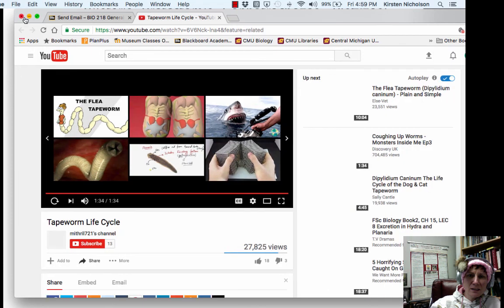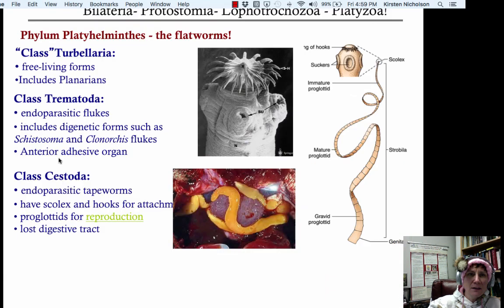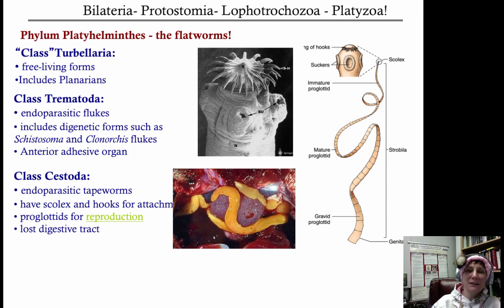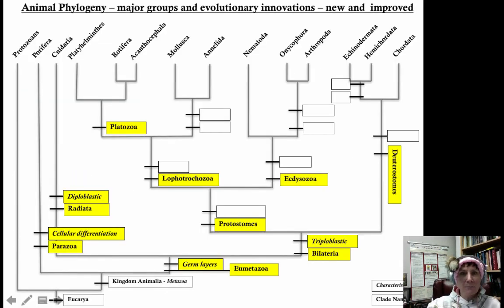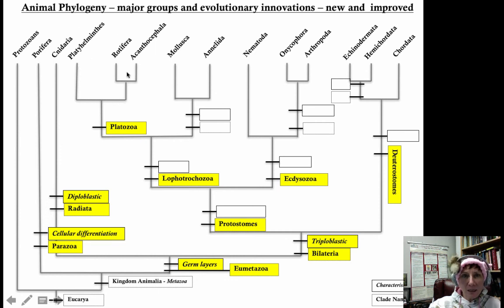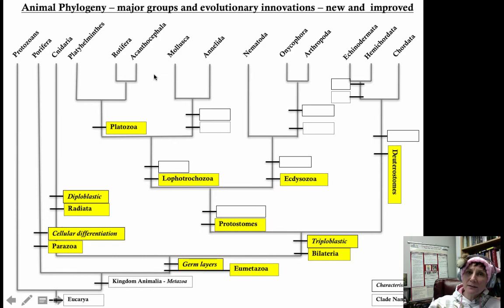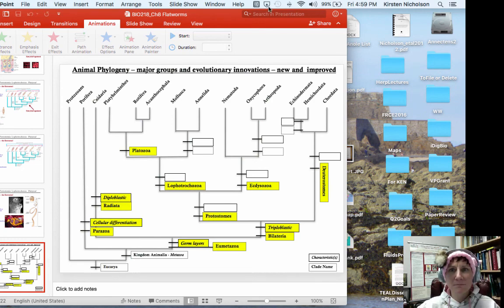That's why it's so important to make sure you treat your pets for ticks and fleas so that they don't get any of these cestodes. We didn't talk about the term platyzoa and we're going to skip that as a group. Next time we're going to talk about the rotifers very briefly before diving into the mollusks. That's all I have — see you next time.